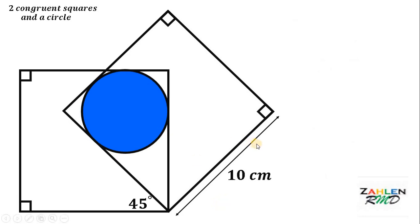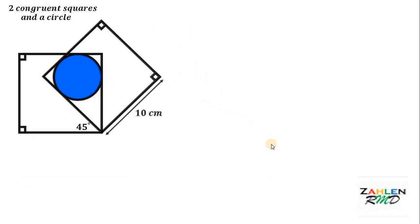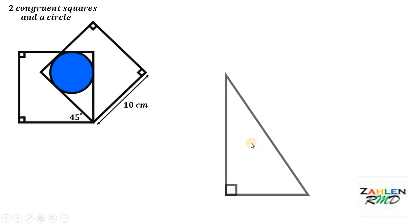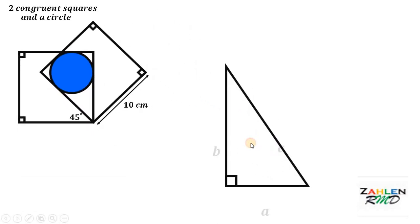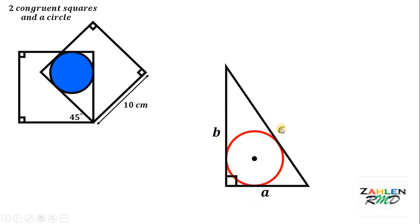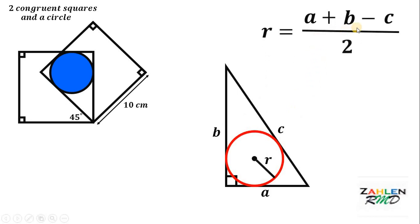To answer this problem, we will use one concept. If we have any right triangle with side lengths a, b, and c, wherein c is the hypotenuse and a and b are the legs of this right triangle, and we draw a circle inside of it, it follows that the length of the radius of this circle must be equal to a plus b minus c, all over 2.